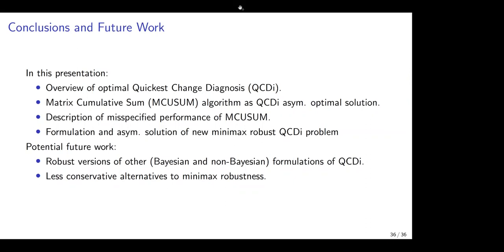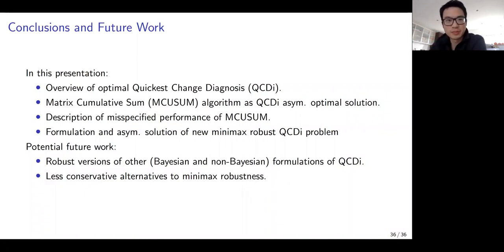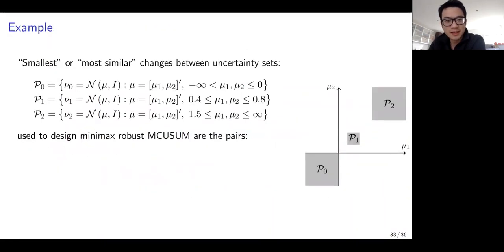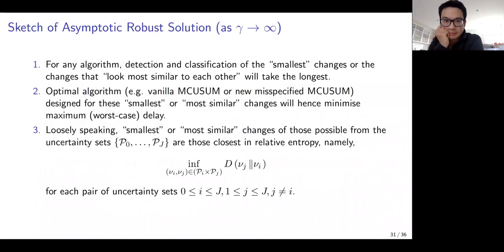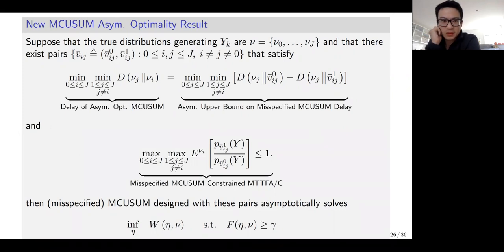During the Q&A, a student asked about the new optimality result: are there non-trivial conditions under which the misspecified delay equals the optimal delay — specifically, non-trivial choices of V-bar for which this holds? The speaker replied that the key is identifying the closest true distributions: if you know them, you can choose V-bar to match those closest true distributions, though this may be somewhat trivial depending on how many possible changes you have.